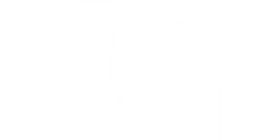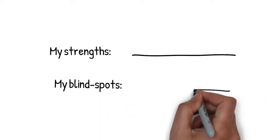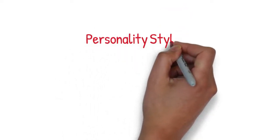Everyone has strengths and blind spots, but most people couldn't tell you exactly what they are. It turns out that the answer has to do with our personality style, how we're wired as a person.